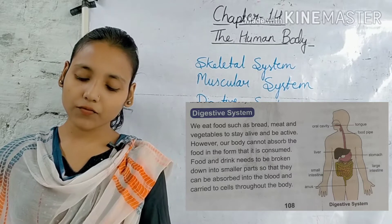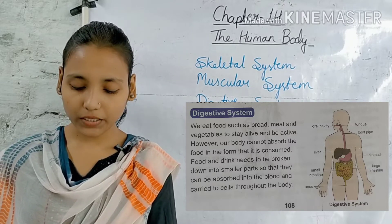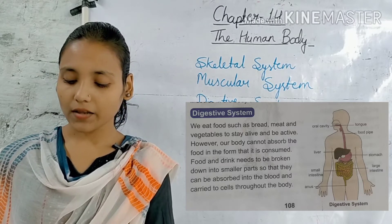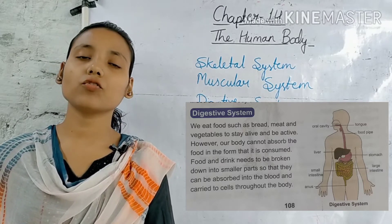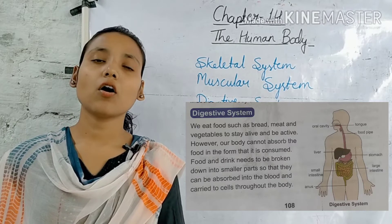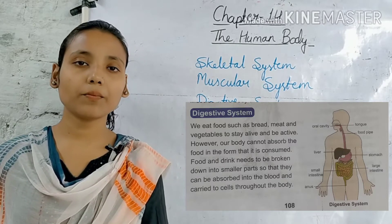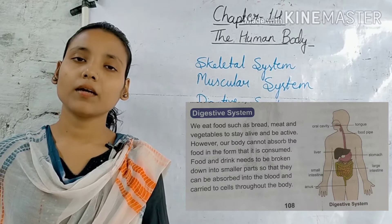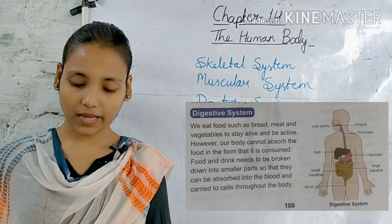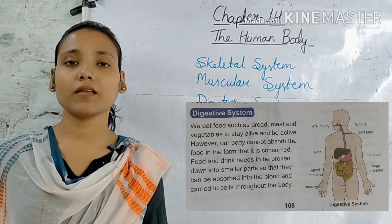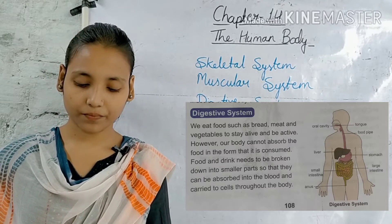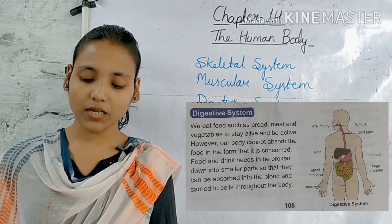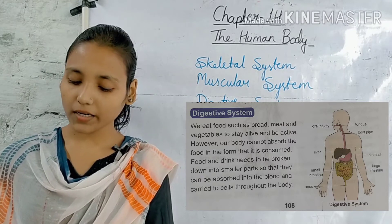We eat food such as bread, meat and vegetables to stay alive and be active. Bachcho, हम active रहने के लिए और जीवित रहने के लिए विभिन्न प्रकार के भोजन खाते हैं, जैसे की meat, bread, milk, egg, vegetables, etc. However, our body cannot absorb the food in the form that it is consumed.